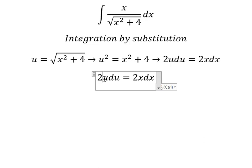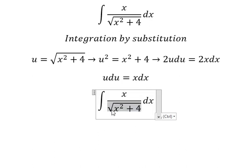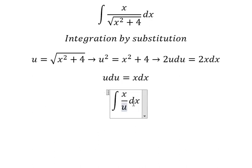So number two and number two will simplify. The square root we change by u. x dx we change by u du.